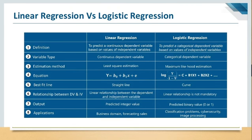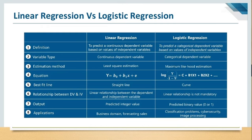For variable type: linear regression uses a continuous dependent variable; logistic regression uses a categorical dependent variable. The estimation method for linear regression is least square estimation — we minimize the error between actual and predicted values. For logistic regression, it is maximum likelihood estimation — we maximize the probability. The equation for linear regression is y = b0 + b1x + e, and for logistic regression it is log(y / (1 - y)) = c + b1x1 + b2x2.